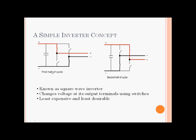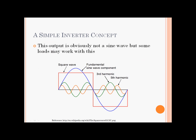Here I want to talk about a simple inverter called a square wave inverter. It converts DC voltage on one side to AC voltage on the other side. It is the least expensive and least desirable inverter because the output voltage is a square wave, not a sine wave. You close two switches to get one polarity, then close the other two switches to get the opposite polarity, and do that continuously each cycle to get an alternating square wave. But this square wave has a lot of harmonic content — there is some power at the 60 Hz component, but most of the power is in other harmonics.